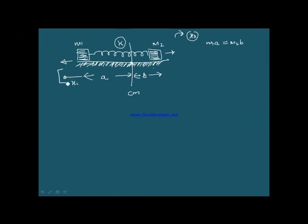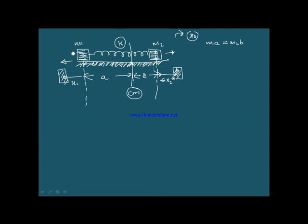Let the extension of mass 1 be x1 — this mass shifts to a place which is x1 away from its mean position. This is the mean position, and this mass comes ahead by x2. So this mass moves by x1 and this moves by x2, and the center of mass will not change at all. Because there is no external force — we are just applying equal and opposite forces on both sides. The net external force on the system is zero, so the center of mass remains at the same place. The new equation gives M1·x1 = M2·x2.